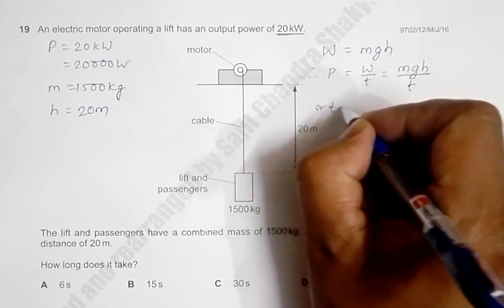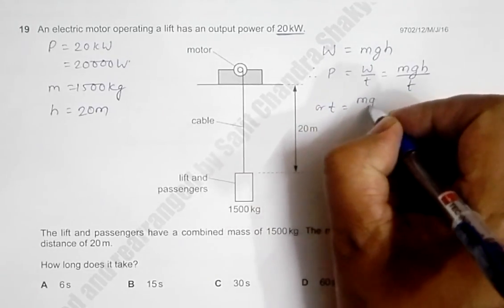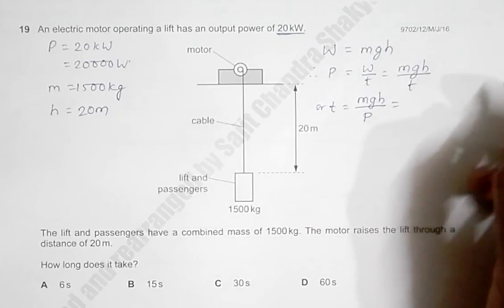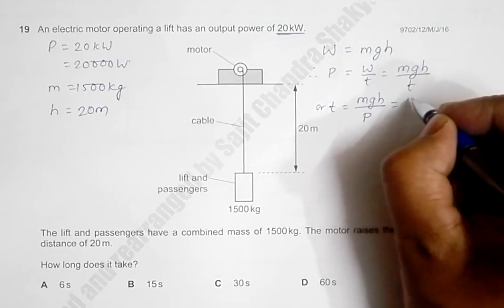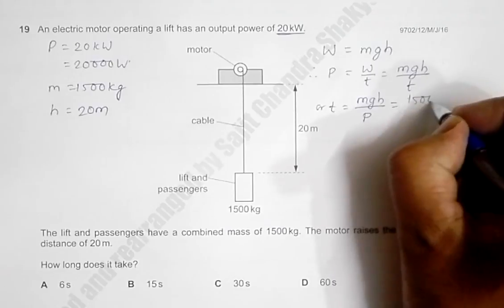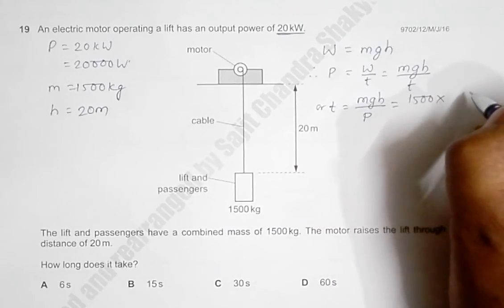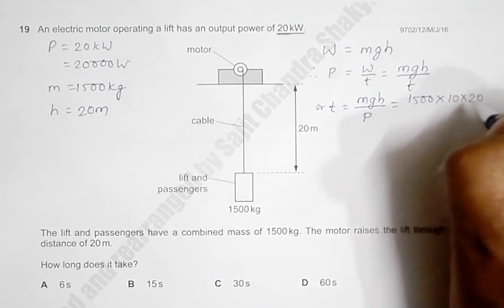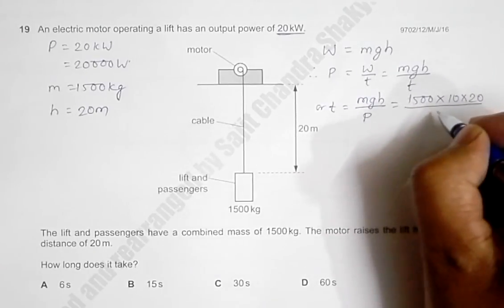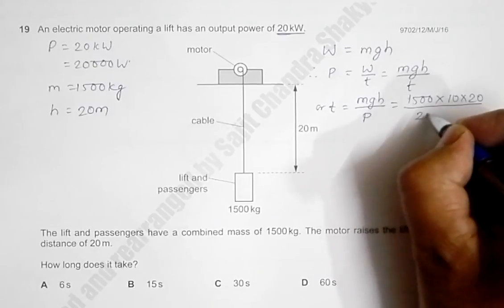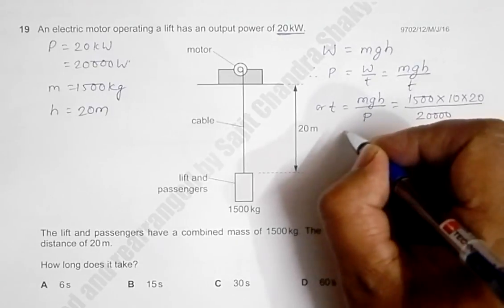This gives in turn t = mgh/P, and that's equal to mass is 1500 into g, let's use simply 10, into 20 divided by the power, which is 20,000.